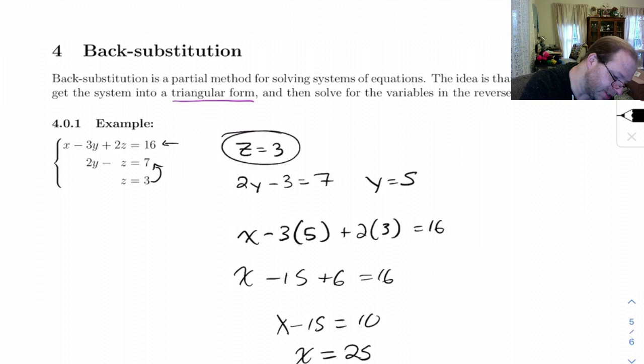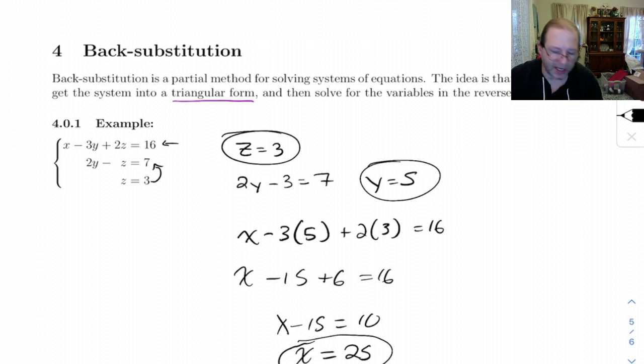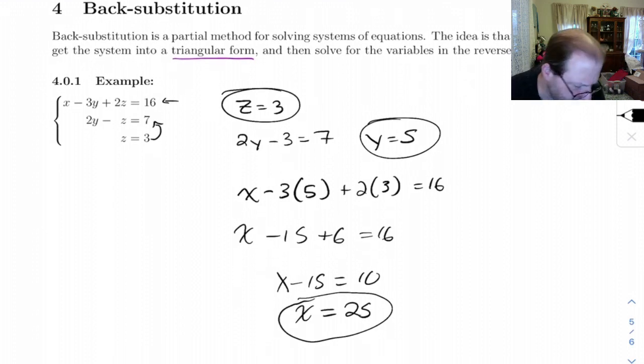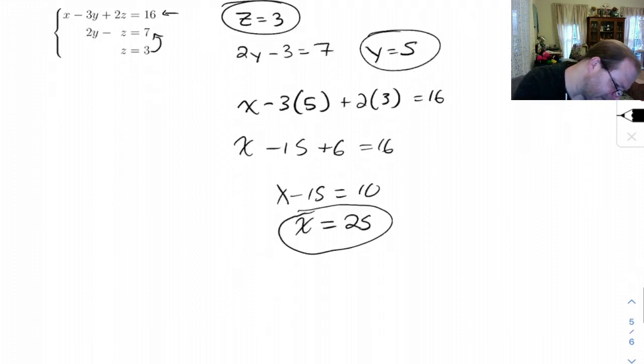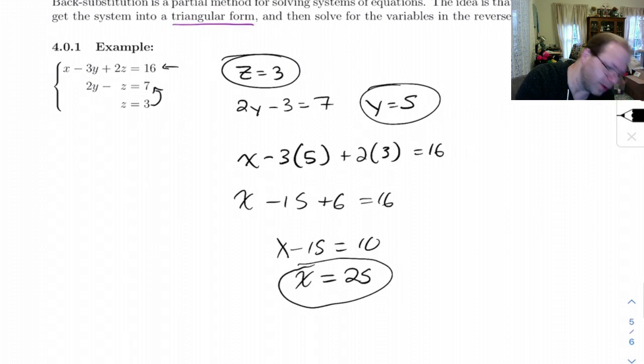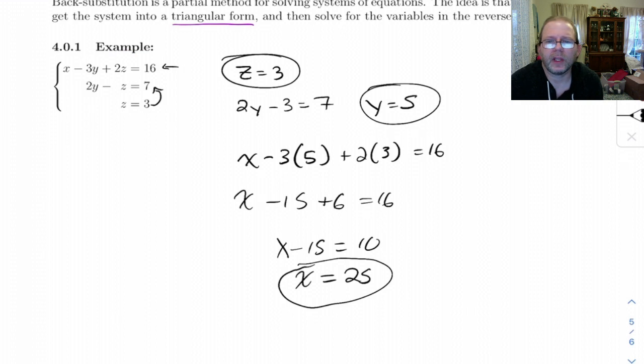I'm going to be lazy and just circle my three answers separately instead of writing them together. But that's the idea behind back substitution. I'm not going to do any additional examples because when we get into section 1.2, we're going to see more about how to get things into this system, or I'm sorry, into this form where we have the triangular form. So I'm going to save that part for 1.2, and for now I'm just going to leave this here. Take care.